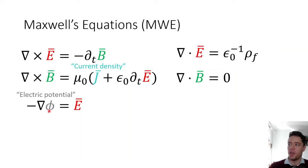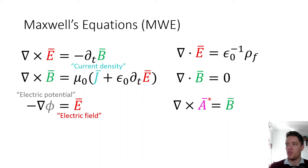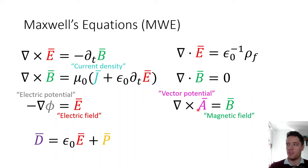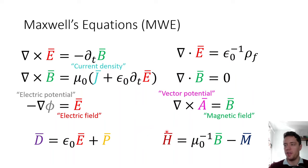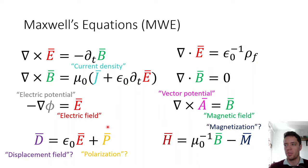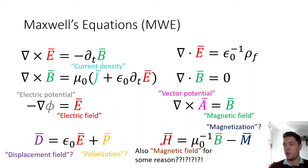You may also have seen that we can define something called the electric potential from which we can derive the electric field, as well as a vector potential from which we can derive the magnetic field. But then you may also have seen the D field, the P field, the H field, and the M field. These have names such as the displacement field, the polarization, the magnetization, and then confusingly the H field is often called the magnetic field — the same label we use for the B field.